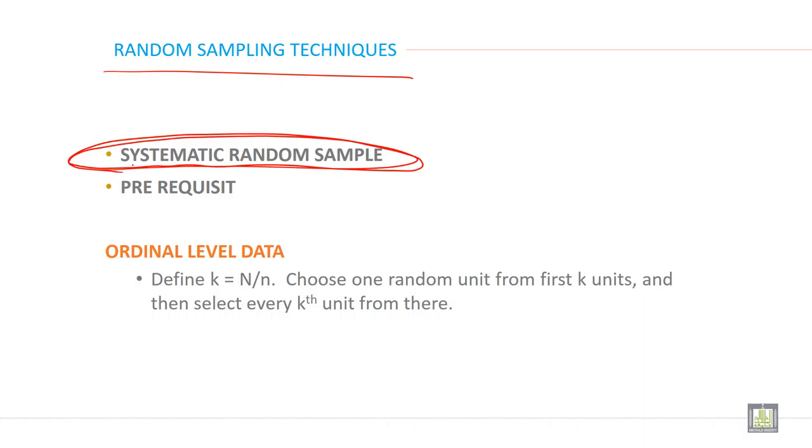Systematic random sampling and the criteria prerequisite for this - when can you apply this? There is one criteria for this.